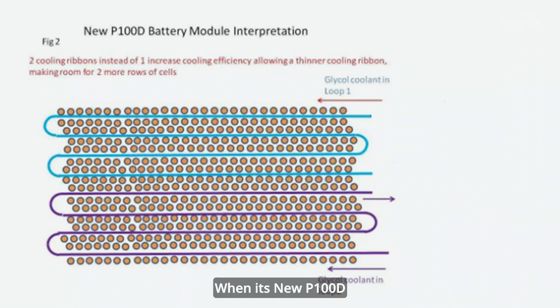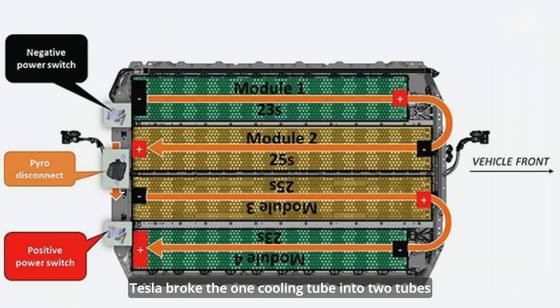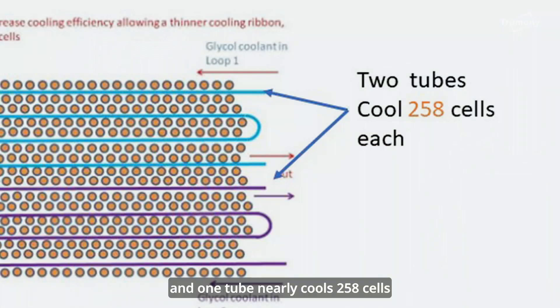When the new P100D battery module came out, Tesla split the one cooling tube into two tubes, with each tube cooling approximately 258 cells.